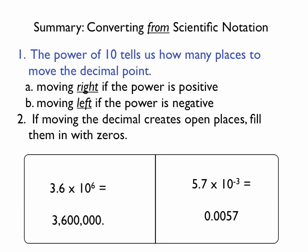To summarize, we first use the power of 10 to tell us the number of places to move the decimal point. It moves to the right if the power is positive, and it moves to the left if the power is negative. Notice that we filled the open places with zeros.